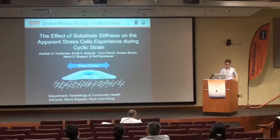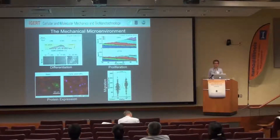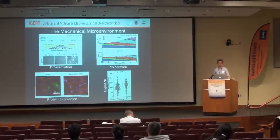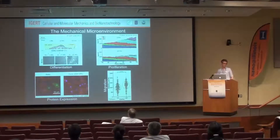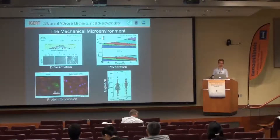In talking about the way that cells experience their environment, there's this component called the mechanical microenvironment. Several groups have looked at how this affects cell behavior, whether talking about differentiation, protein expression, proliferation, or migration. There are many different mechanical signals influencing cell behavior, described by not only substrate stiffness but also exogenous strain applied to the cell.